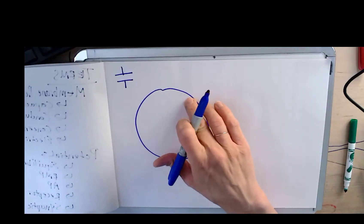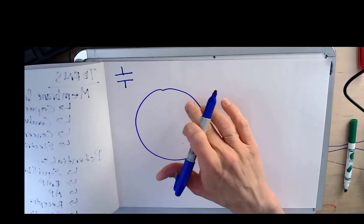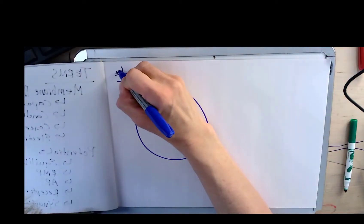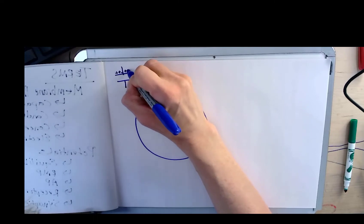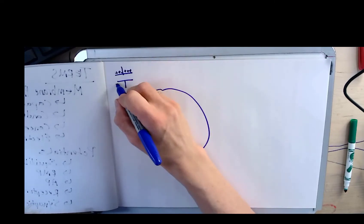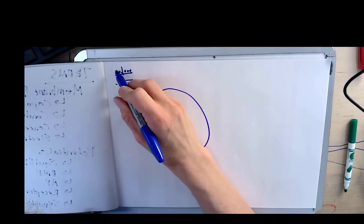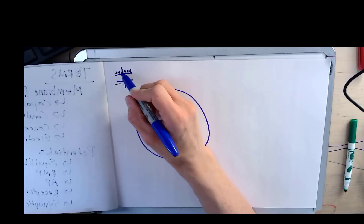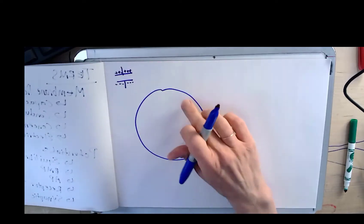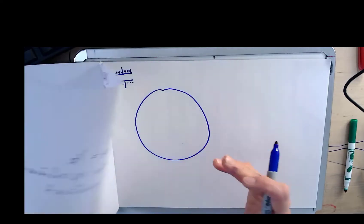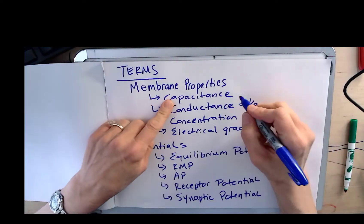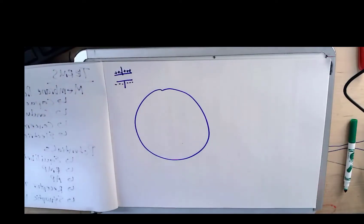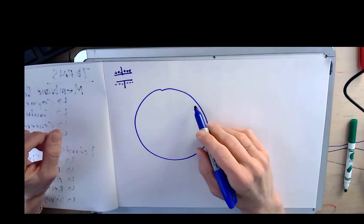What that means is that you can store charge along the membrane. In a capacitor, positive charges are hanging out on one side and negative charges on the other. Unlike charges attract — they want to be together, but they can't because of the space between them, and that's what the membrane does. You have capacitance — you can store up charge along the membrane.